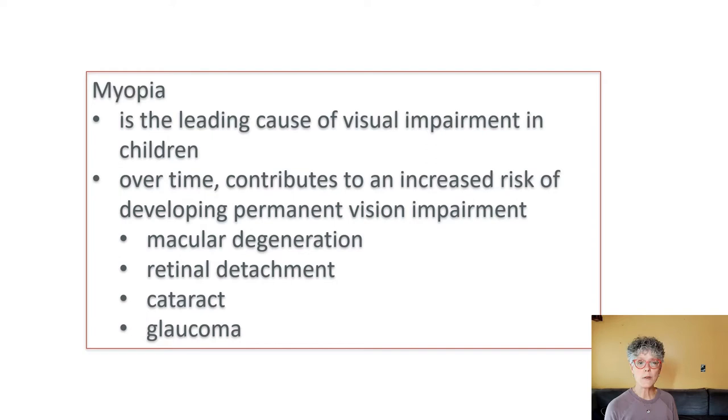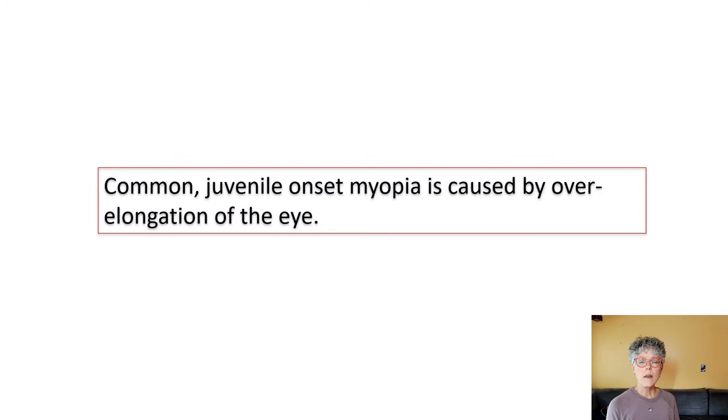Myopia is the leading cause of visual impairment in children. Over time it contributes to an increased risk of developing permanent vision impairment including macular degeneration, retinal detachment, cataract, and glaucoma.